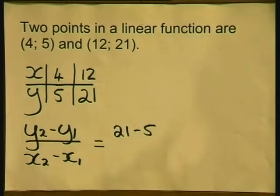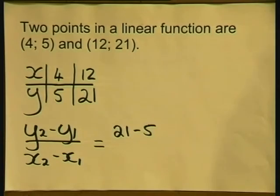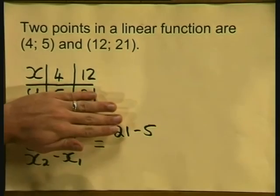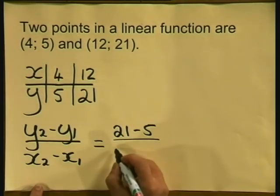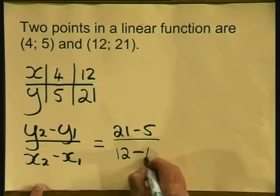Now we need to do the same thing for the x's. You must subtract in the same order so it is 12 minus 4. That's right. So for the x's in the same order, we have 12 minus 4. So the denominator of this ratio is 12 minus 4.